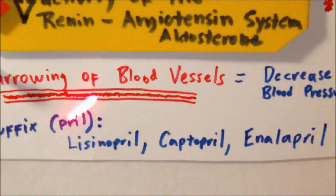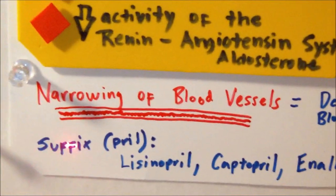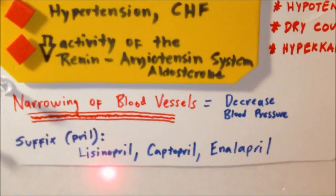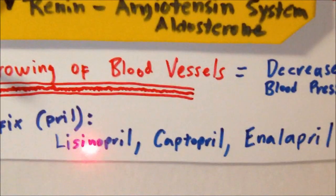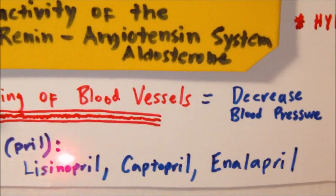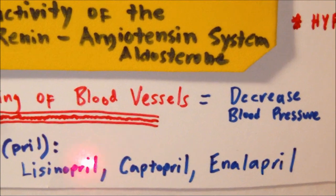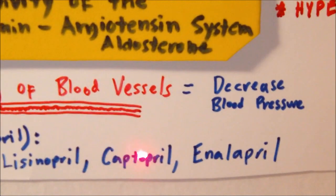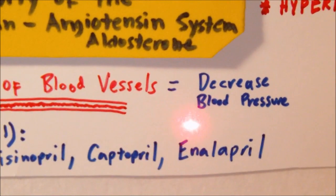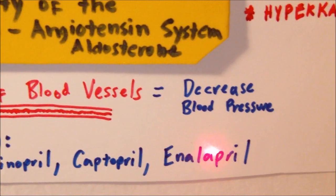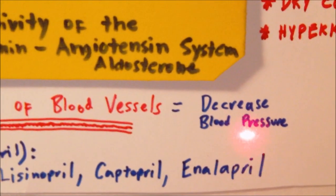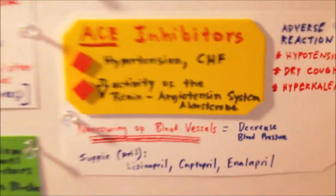ACE inhibitors usually have the suffix -PRIL at the end of each medication name. The most common medications you will encounter in the NCLEX exam include lisinopril (Prinivil), captopril (Capoten), enalapril (Vasotec), and quinapril (Accupril).